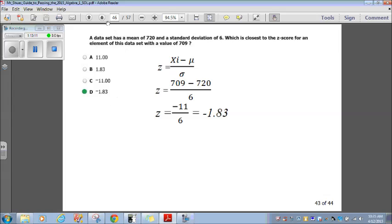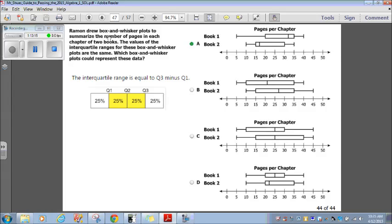We're at the end here. Question 44. Ramon drew box and whisker plots to summarize the number of pages in each chapter of two books. The values of the interquartile ranges for these box and whisker plots are the same. Which box and whisker plots could represent this data? Well, from statistics, you need to remember what interquartile range is. Interquartile range is equal to the third quarter minus the first quarter. So, let's look at A. The interquartile range, Q3, quarter 3 is at 35 here. Quarter 1 is at 20 here. 35 minus 20, that's 15. Let's look at book 2. Quarter 3 is at 30. Quarter 1 is at 15. 30 minus 15 is 15. They match. Boom. That's it. So, A is our answer. We're done.